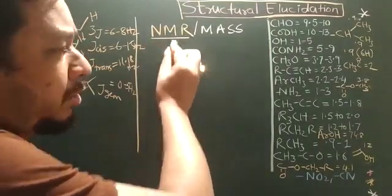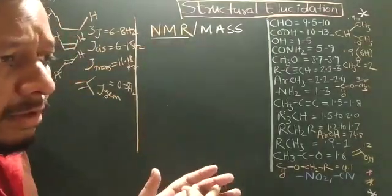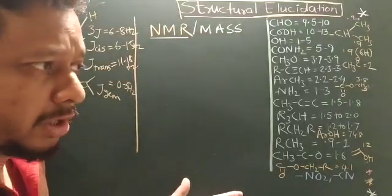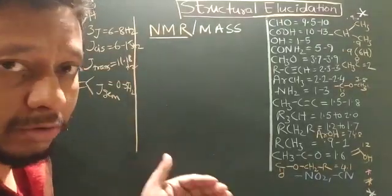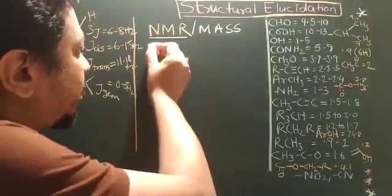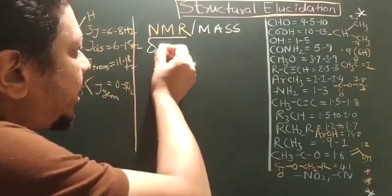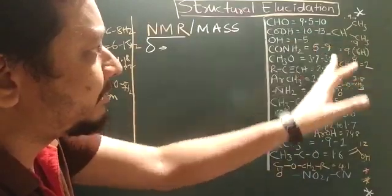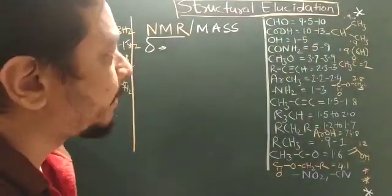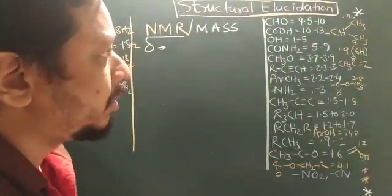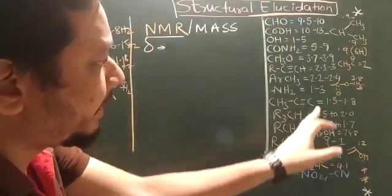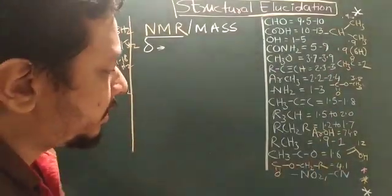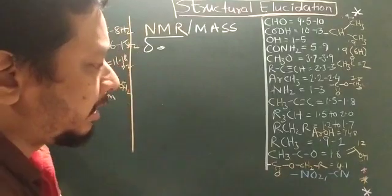For NMR, you should know what the concept of NMR to determine the structures. The first important concept is chemical shift, where I have already discussed the chemical shift value like if it is aldehyde proton, the chemical shift is 9.5 to 10 ppm, carboxylic acid 10 to 13 ppm like that, all the ppm values are there. These are the chemical shift.